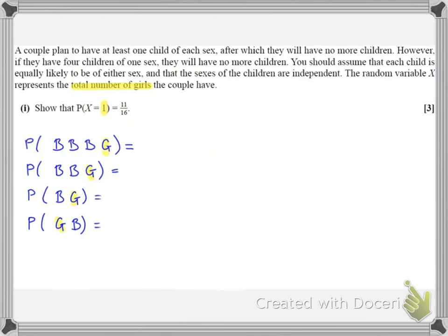So now that I've got my different possible outcomes, I just need to find the probabilities of these outcomes. So the probability of this first scenario, so a boy and then a boy and then a boy and then a girl, that's going to be a half multiplied by a half multiplied by a half multiplied by a half, or a quicker way to write that will be a half to the power of 4. Similarly, the next one is a half times a half times a half, or a half cubed, and then for boy-girl we get a half squared, and for girl-boy we get a half squared.